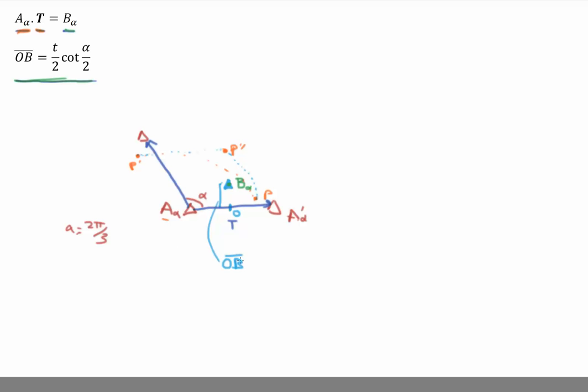And that's given by half of that translation distance, where this is half of the original translation vector distance, times the cotangent of alpha over 2.